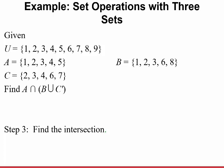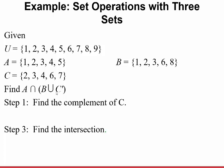I want to find A intersection with (B union C complement). The first thing to do is start inside the parentheses and find the complement of C. The complement of C is the elements in the universal set that are not in set C, which would be {1, 5, 8, 9}.